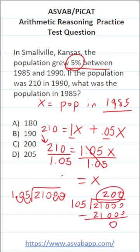So X is 200. Again, X refers to the population in 1985. So we know its population in 1985 was answer C, 200 people.